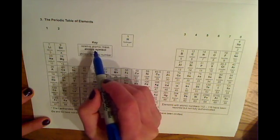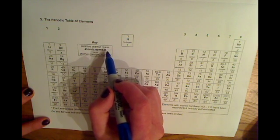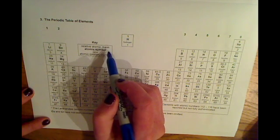So in the key, it says at the top is the relative atomic mass. And this is what you need to be looking for, because we're going to be calculating relative formula mass.